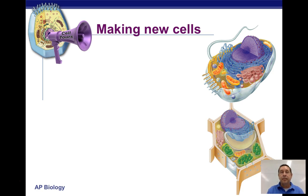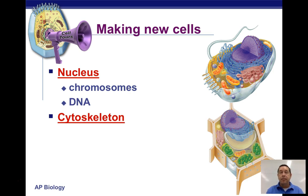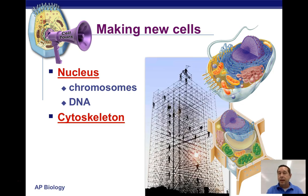So what do we need to make new cells and where does it all happen? If you think back to the cell, it involves a lot of stuff in the nucleus — that's where our chromosomes are, our DNA, our genetic material. If we're going to make a new cell, it needs a set of chromosomes, a set of genetic material, identical to the original cell. In order to move the chromosomes to the right places during cell division, we have a cytoskeleton, which also gives structure to the cell.